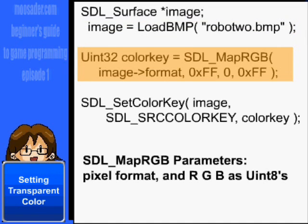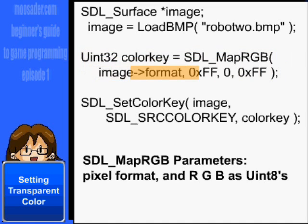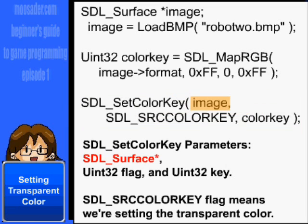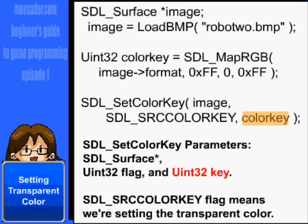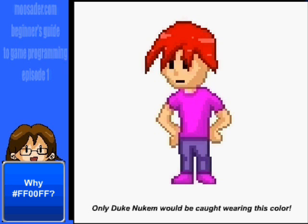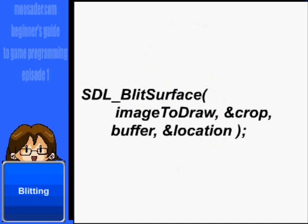Next, we'll want to make that pink magenta color transparent. First, we create a uint32 named color_key and set it equal to SDL_MapRGB of the image format, 0xFF, 0, and 0xFF. Then we use the function SDL_SetColorKey for the image, SDL_SRCCOLORKEY, and our color_key integer. The reason we usually make magenta — all red, no green, and all blue — transparent is because it's rarely used in sprites. It's a really ugly shade of pink.